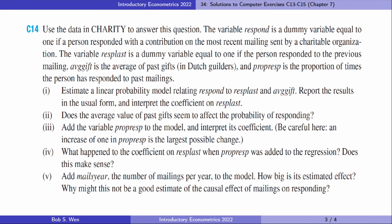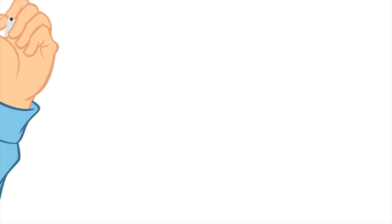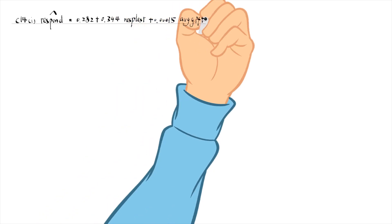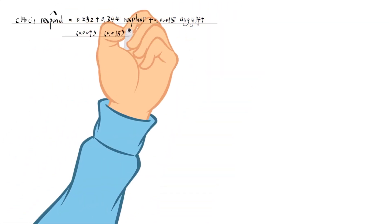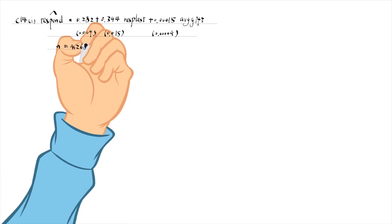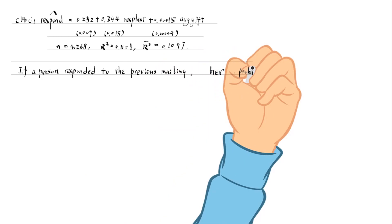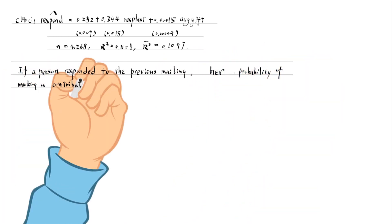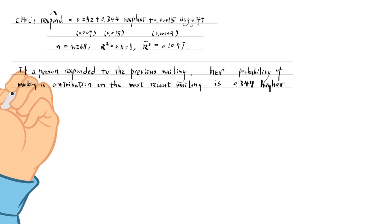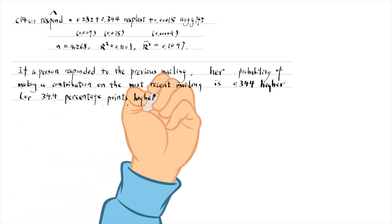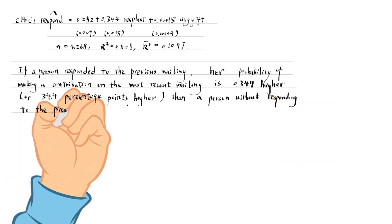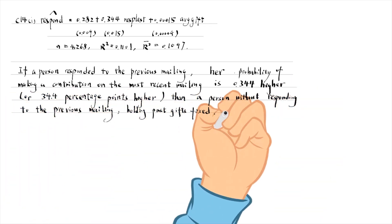Let's find answers to Computer Exercise 14. The estimated equation for the linear probability model is as follows. If a person responded to the previous mailing, her probability of making a contribution on the most recent mailing is 0.344, or 34.4 percentage points higher than the person who did not respond to the previous mailing, holding average past gifts fixed.